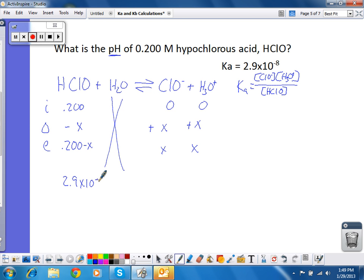So plugging numbers in, there's my Ka value. On the top I have x squared. On the bottom I have 0.2. Solving for x, I get 7.6 times 10 to the negative 5th. 10 to the negative 5th, 10 to the negative 1st, that's not going to affect it.